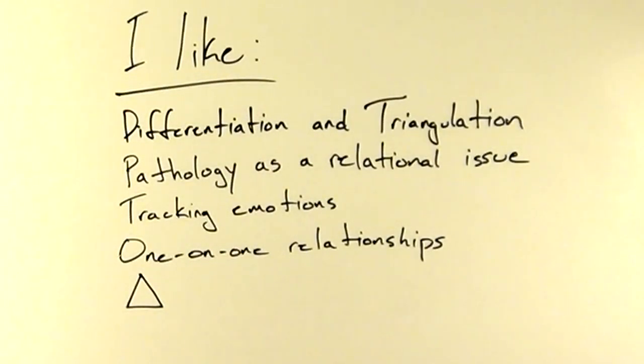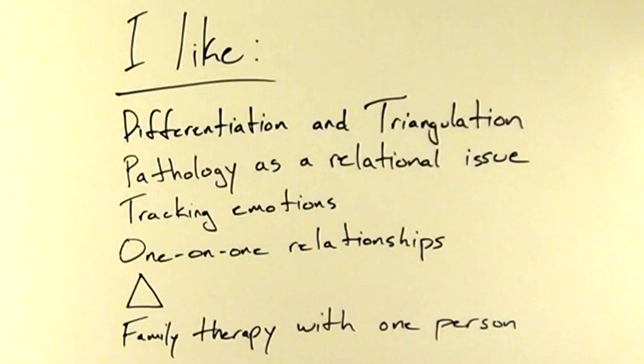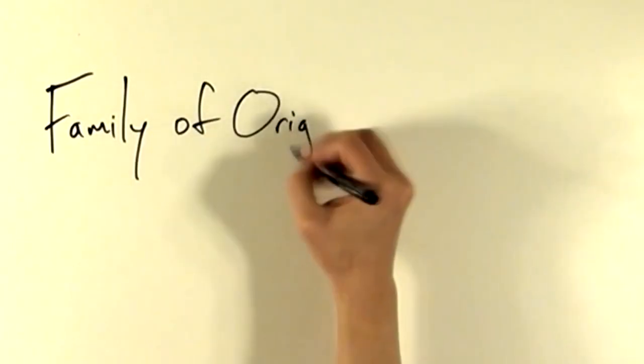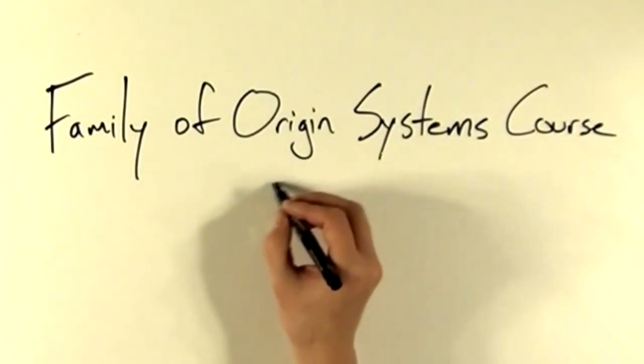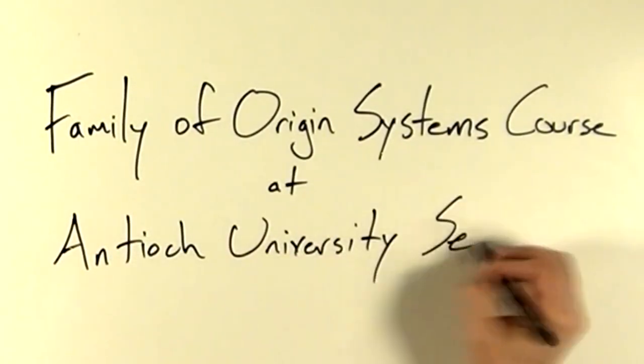The assessment of triangles is also very useful when treating families. I like how this approach gives permission to family therapists to work with individuals if they determine that it would be the most effective way to work with them. And finally, I like this theory because it provided the foundation for the much-loved family of origin course in my marriage and family therapy program at Antioch University, Seattle.